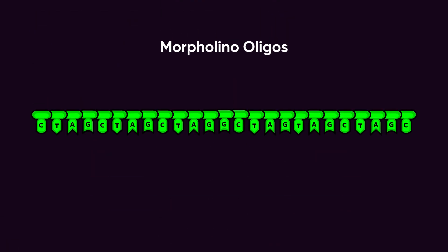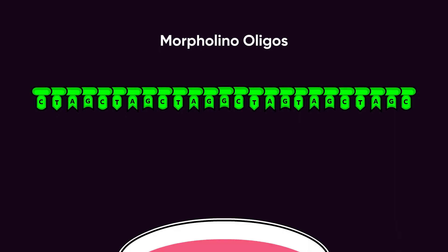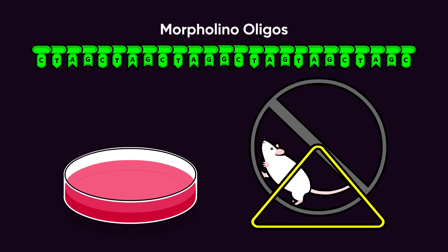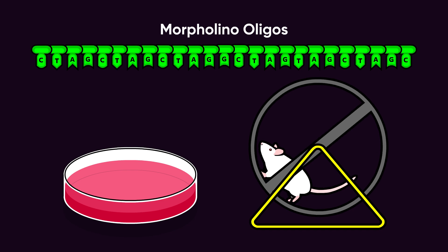Now, with the use of Morpholino Oligos, the pattern of splicing can be manipulated in the lab. This can be done in cell cultures or in vivo. If you're not familiar with the antisense molecules called Morpholinos, see the animation titled What are Morpholinos?